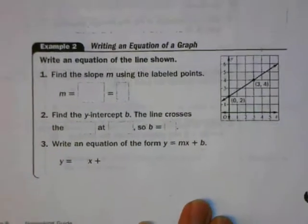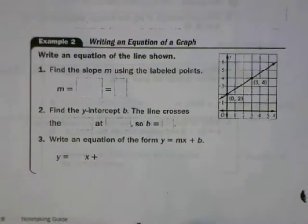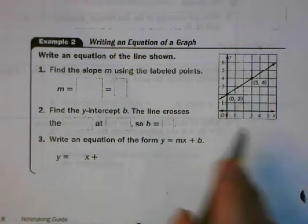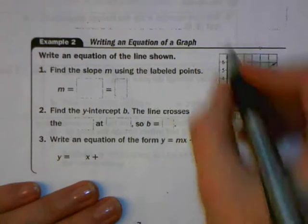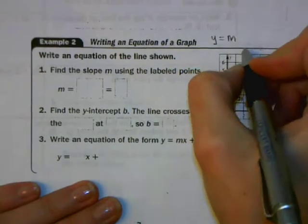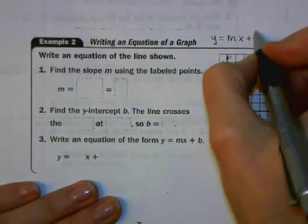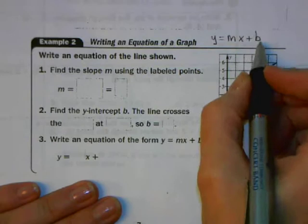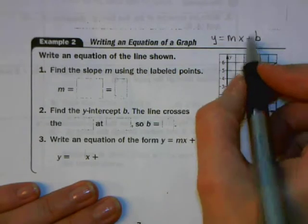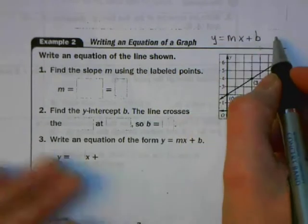Next, let's suppose that instead of giving you a description of the slope and y-intercept of a line, I just gave you a graph and said write the equation of the line that's shown here. Well, if I knew what the slope (m) and the y-intercept (b) were for this line, I could just plug them in — and that would be pretty easy. These are pretty easy things to find.